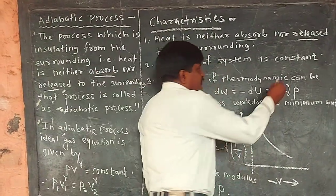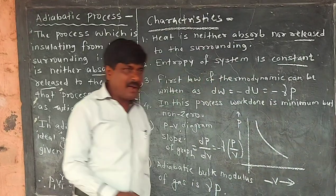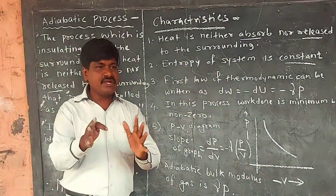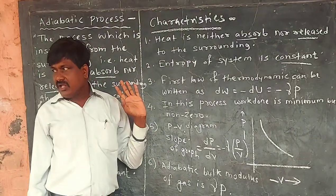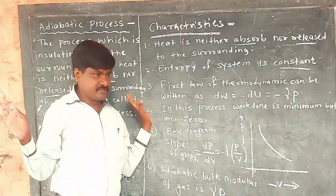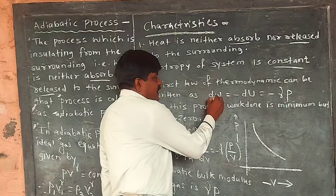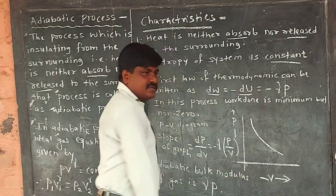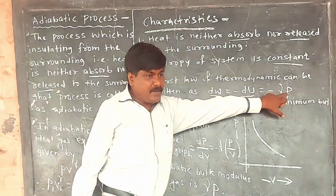Entropy of the system is constant. There is no change in heat, meaning by the first law of thermodynamics, dW is equal to minus dU.